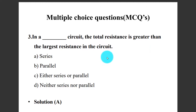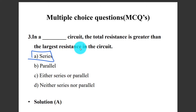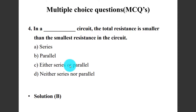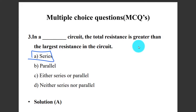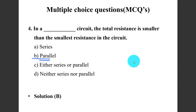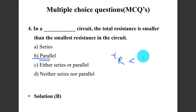In a series circuit, the total resistance is greater than the largest resistance in the circuit. In a parallel circuit, the total resistance is smaller than the smallest resistance in the circuit. So total resistance is greater in series and less than the smallest resistance in parallel.